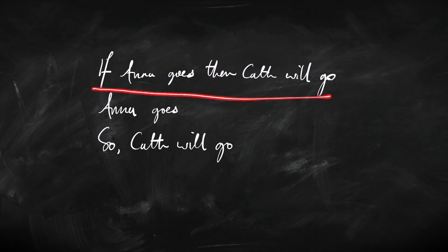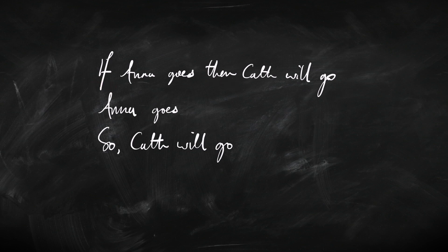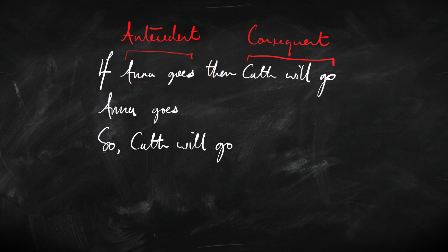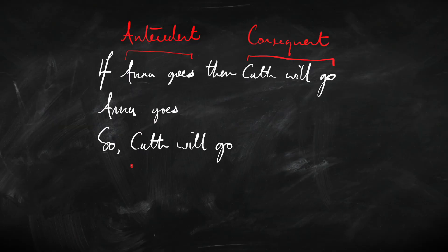Let's focus on this argument for a moment because it's an important one — these features are going to keep cropping up. Look at the first premise: it's an if-then. When we've got an if-then, there are two important parts. There's the 'if' bit — that is called the antecedent — and the 'then' bit, which is called the consequent. The second premise, 'Anna goes,' is exactly the same as the antecedent in the first premise. And the conclusion, 'Kath will go,' is exactly the same as the consequent of that first premise. This whole argument is called modus ponens. It's an important argument and we're going to keep coming back to it.